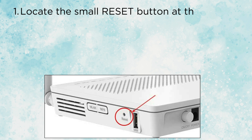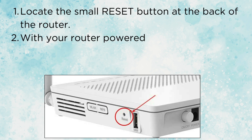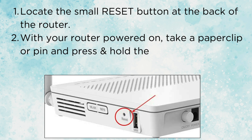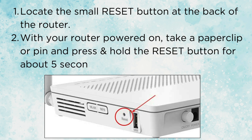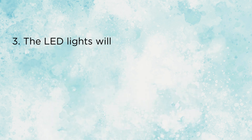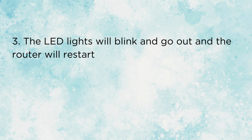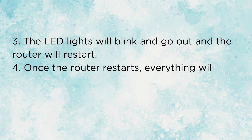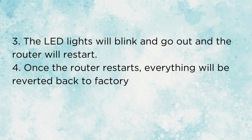1. Locate the small reset button at the back of the router. 2. With your router powered on, take a paper clip or pin and press and hold the reset button for about 5 seconds, then let go. 3. The LED lights will blink and go out and the router will restart. 4. Once the router restarts, everything will be reverted back to factory defaults.